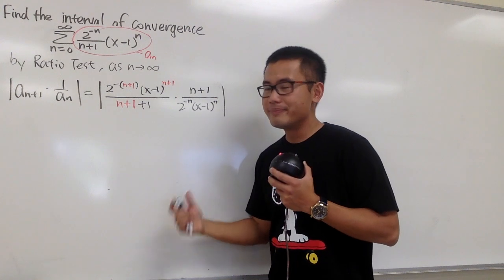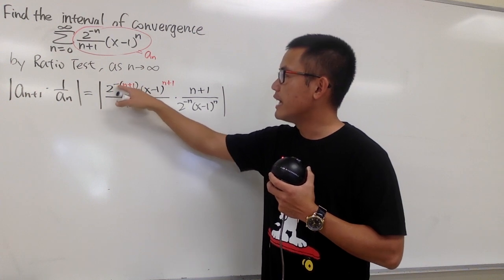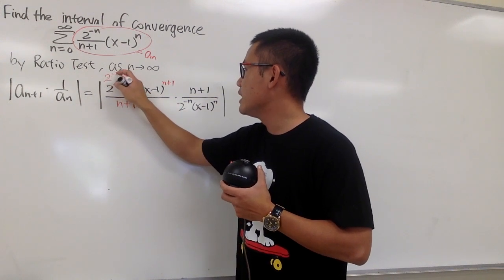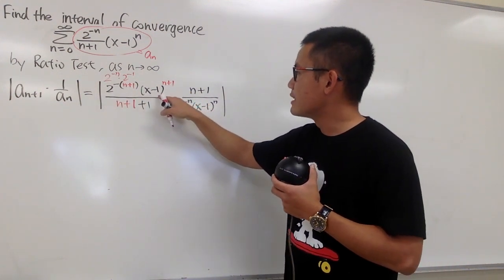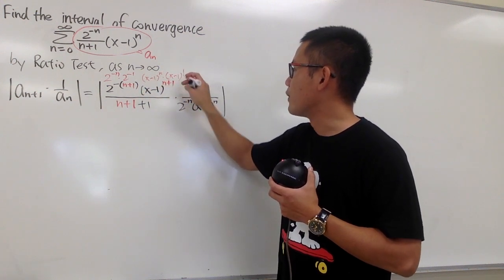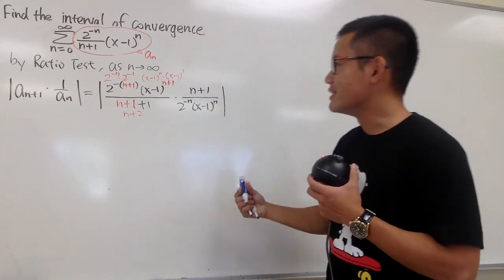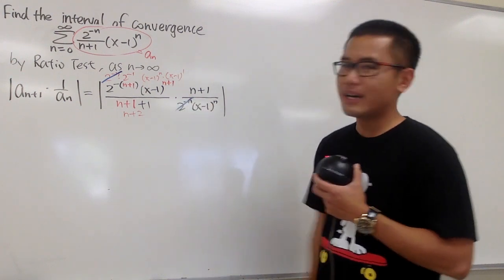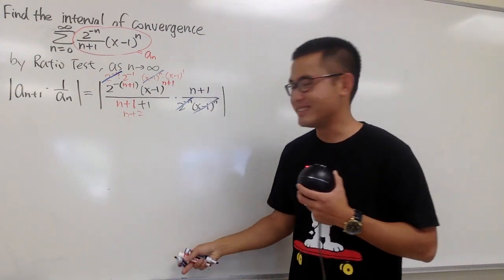To continue, we can distribute the negative here. So 2 to the negative (n+1) is the same as 2 to the negative n times 2 to the negative 1. We can do the same thing: (x minus 1) to the nth power times (x minus 1) to the first power. And on the bottom, that's n+2. Now we can see the cancellations — 2 to the negative n cancels with 2 to the negative n, and (x minus 1) to the n cancels with (x minus 1) to the n.